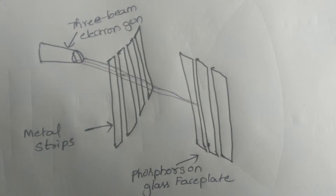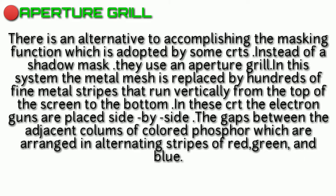The gaps between adjacent columns, the colored phosphor dots - through the vertical gaps, the beams hit the red, green, and blue phosphor dots to match out.